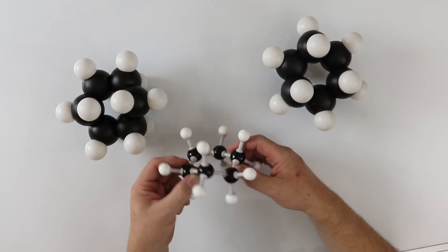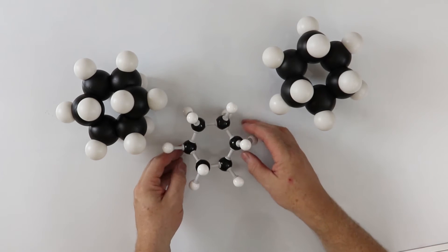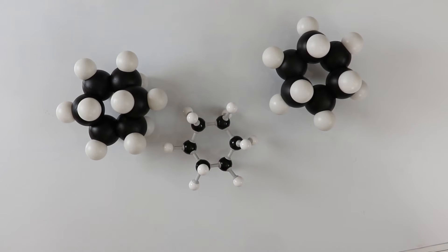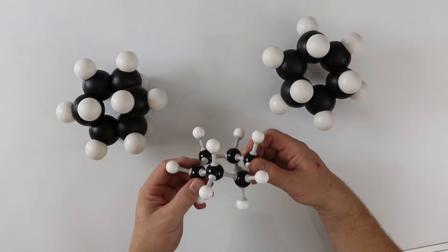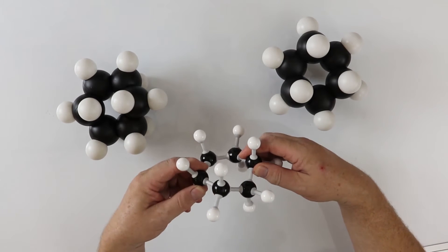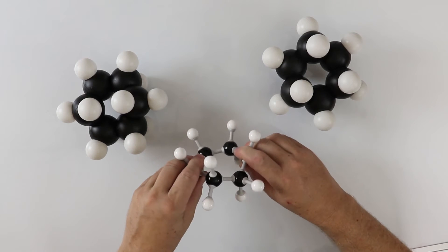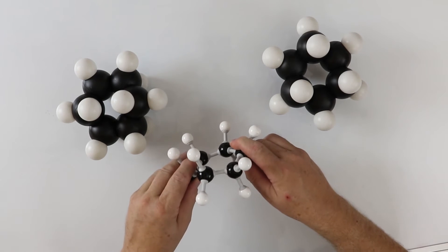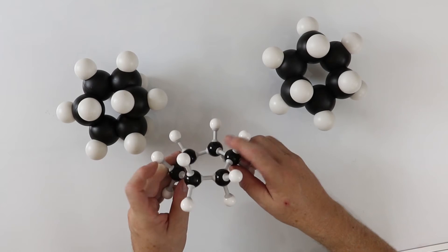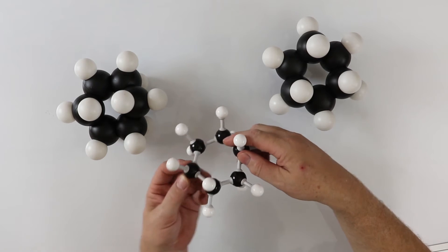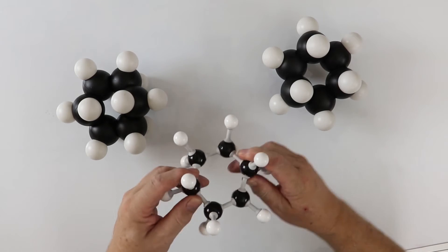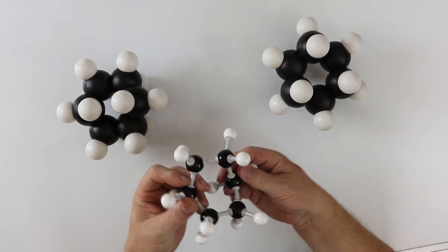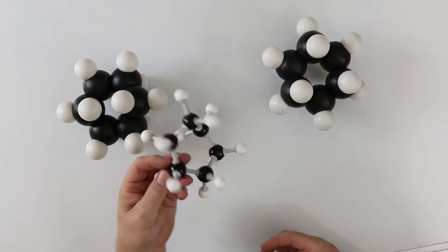Now if we have a look at these models here, the chair form is more stable than the boat form because the atoms are further apart. Therefore, they have a lower energy state. With the model here we can see how the plastic bonds are deformed as I try to straighten the model up, and it easily moves between the two stable energy states: the boat and the chair form.